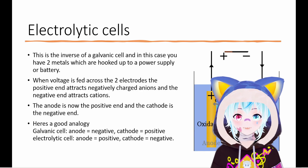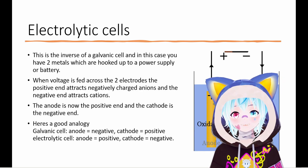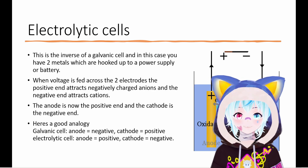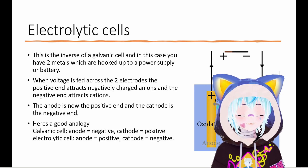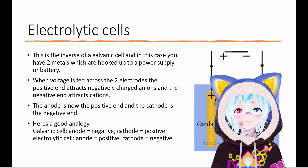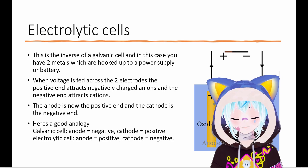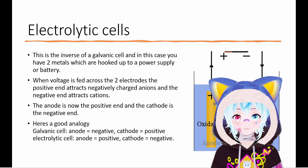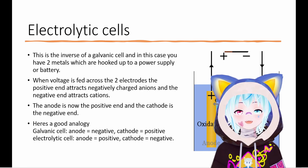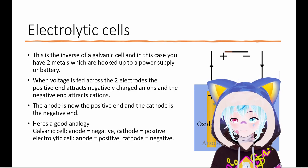The inverse of a galvanic cell is an electrolytic cell. Instead of a voltage being generated at the electrode, the electrodes are hooked up to an external power supply, which supplies a steady voltage and current through the cell.